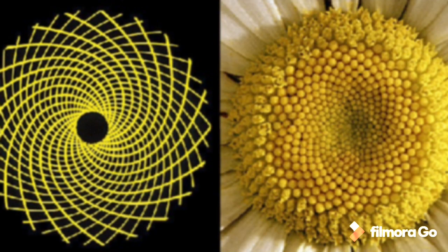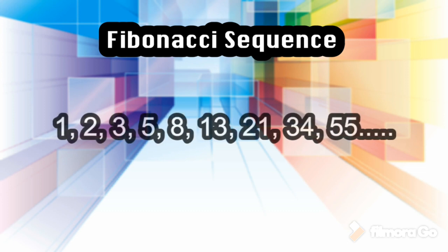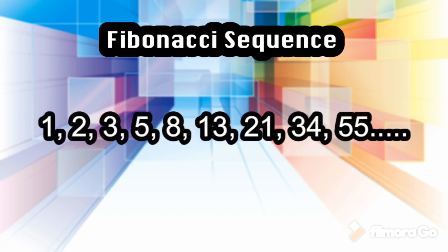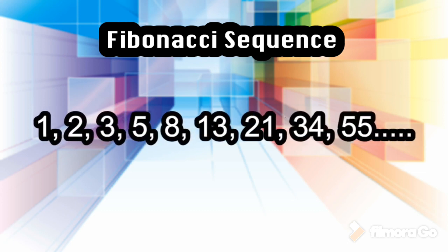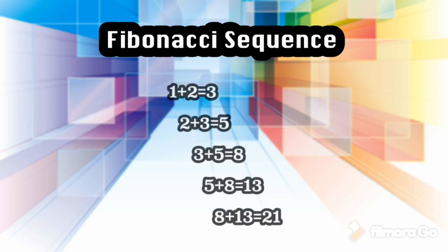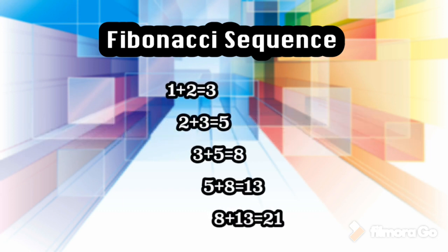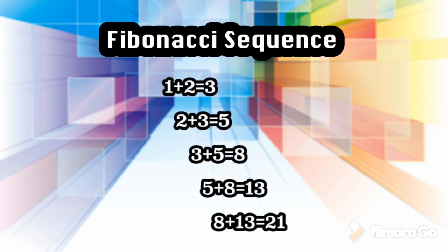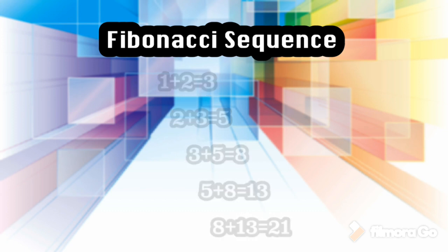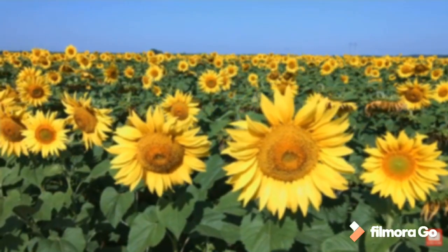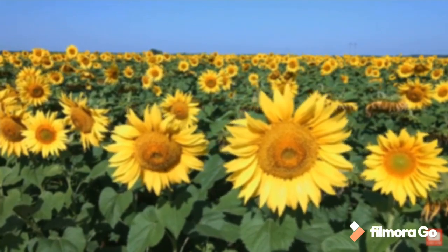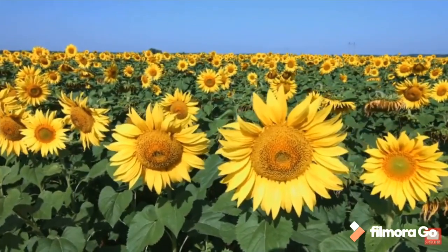The sequence starts with 1 followed by 2, and all other terms are made by adding the two preceding ones. There are also spiral families appearing further towards the center of the seed head, going in both directions, and counting them will probably reveal a smaller pair of the Fibonacci sequence.